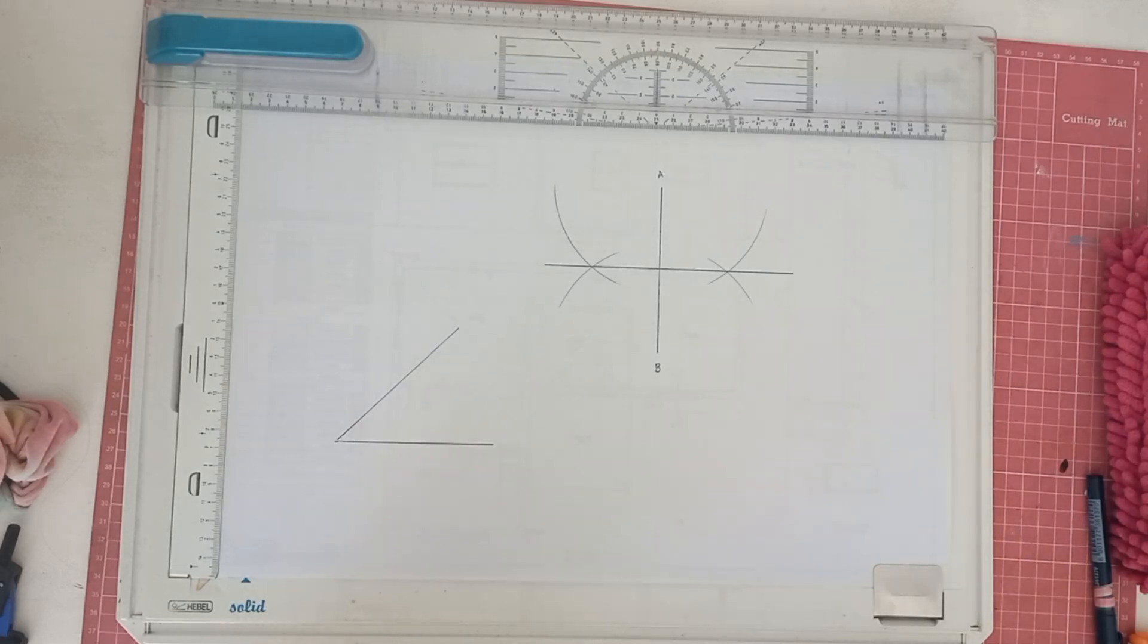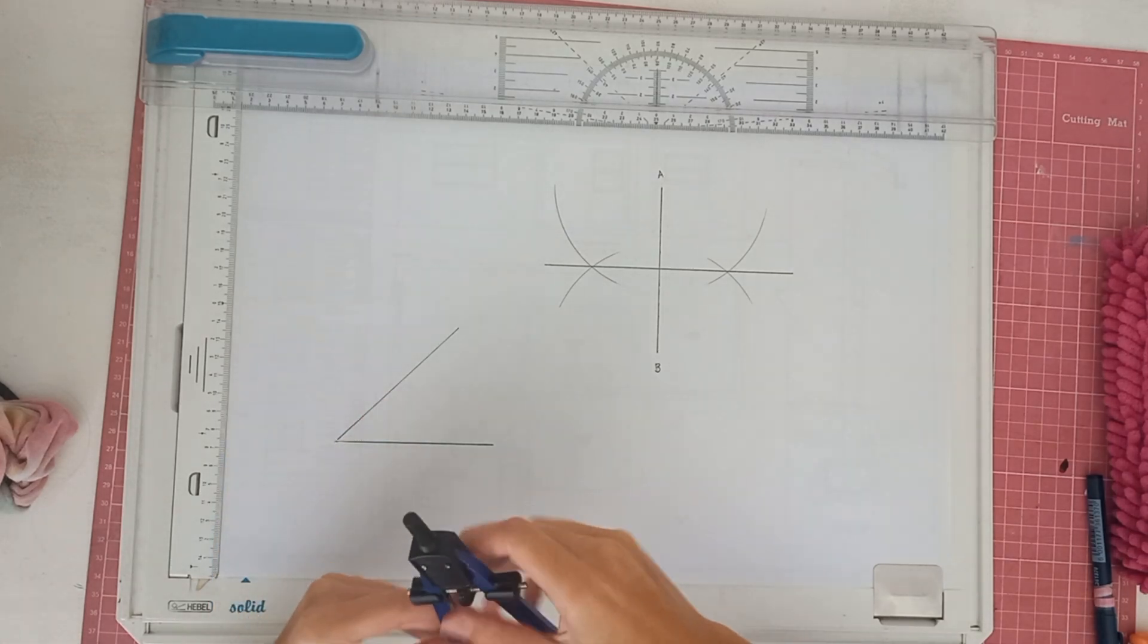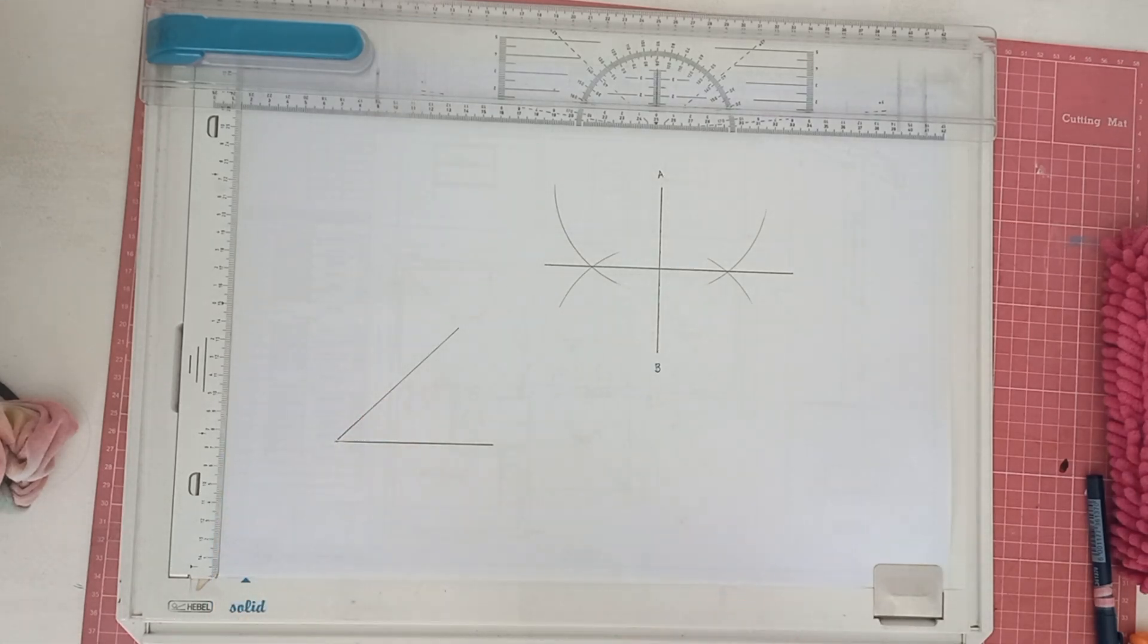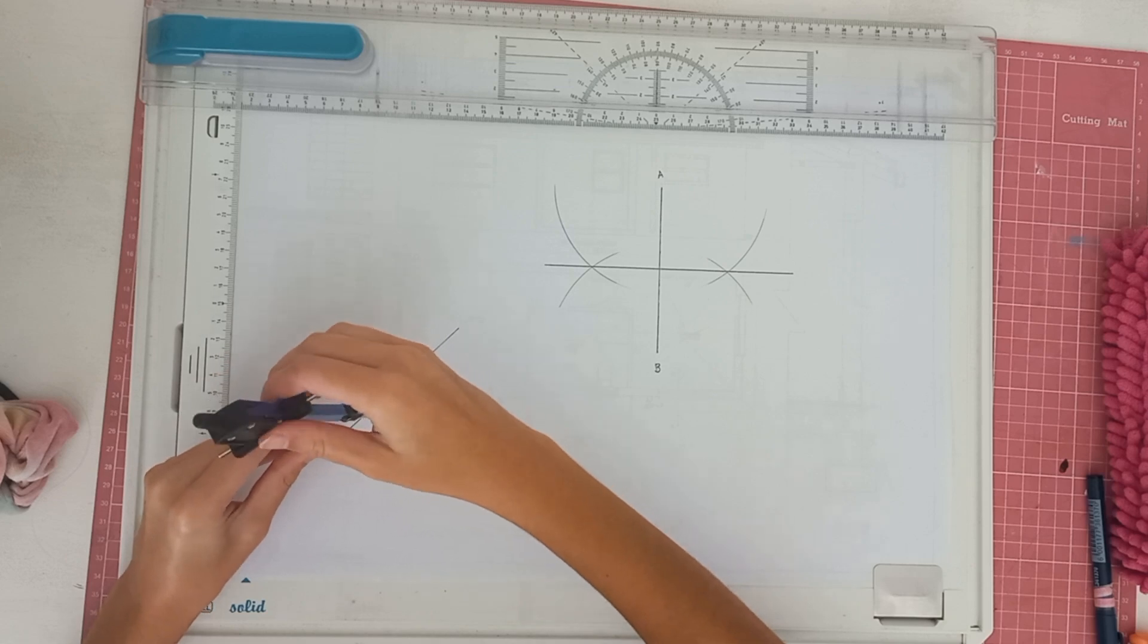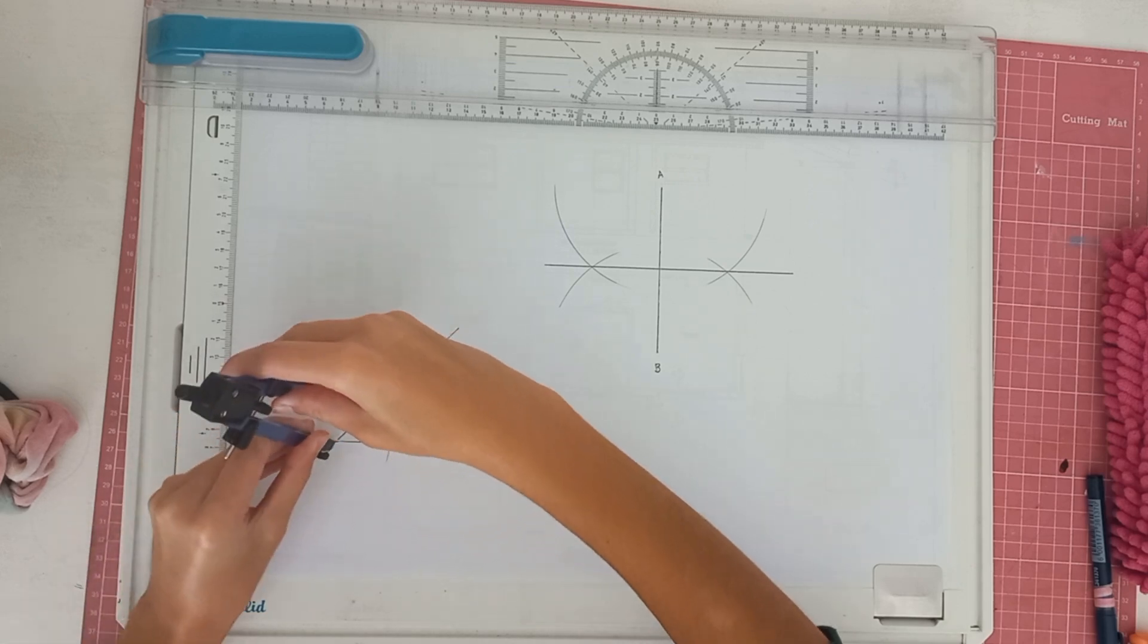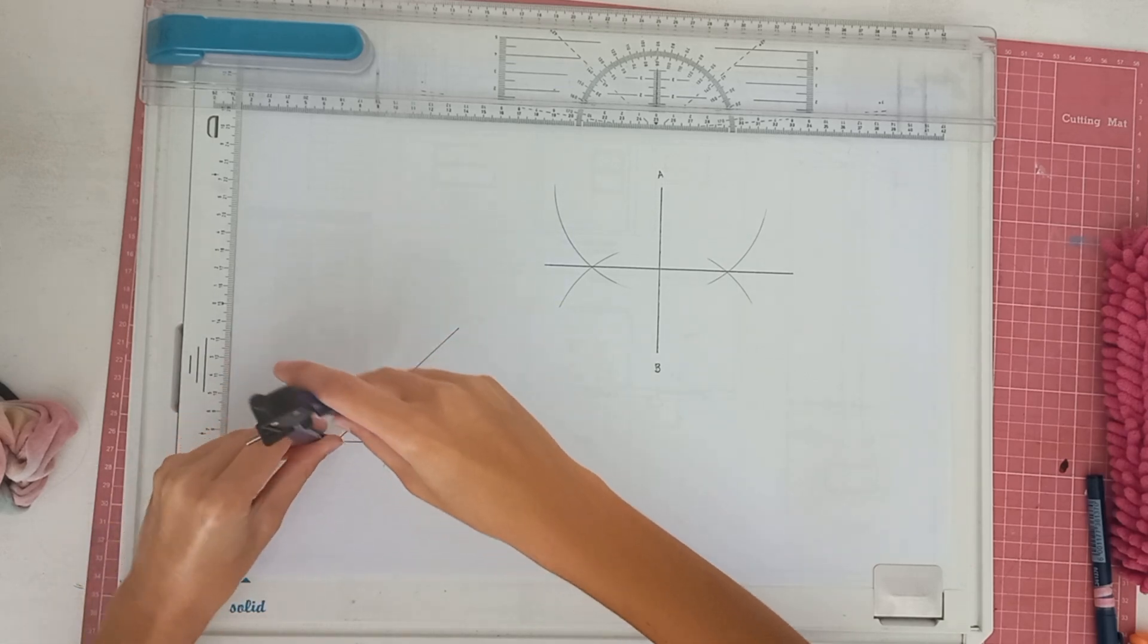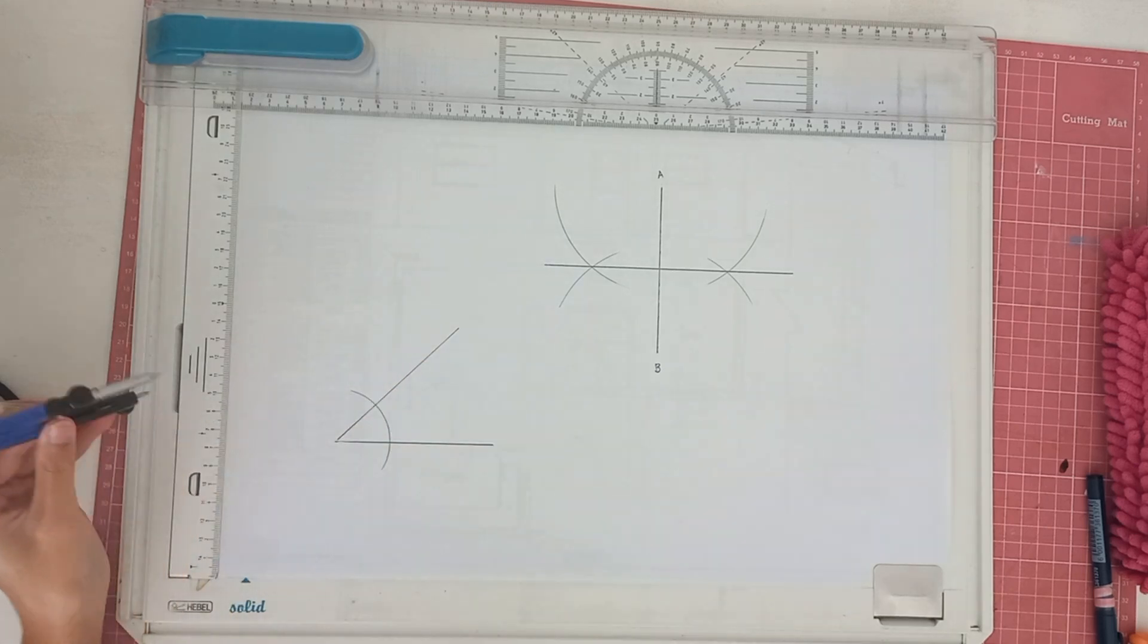Now that we have got that done and dusted we are going to do the angle part. The angle is almost the same, definitely the same concept. You're going to start off by taking your compass and from the corner of the angle you're going to make a circle. You can see that I have done that just like this over here.